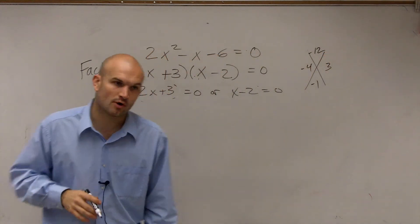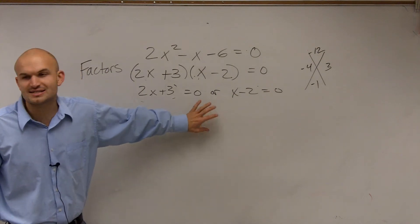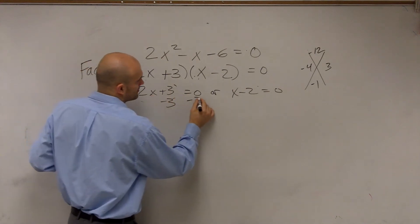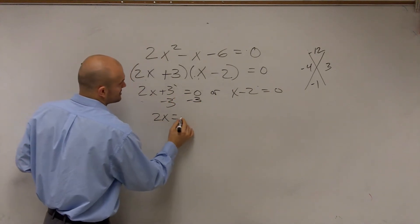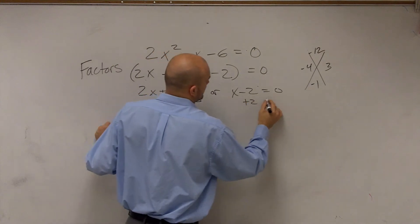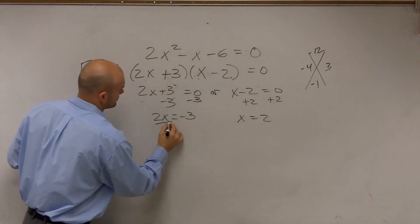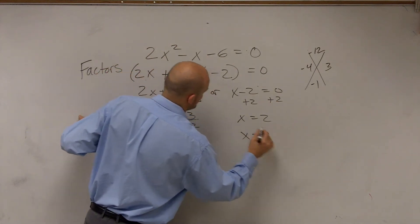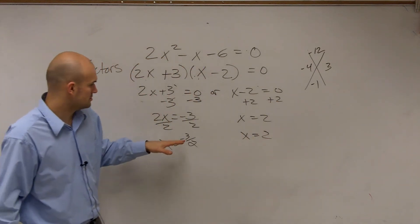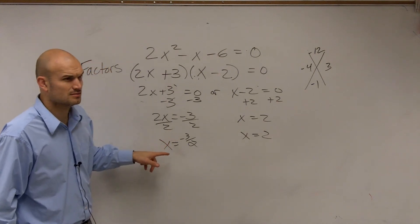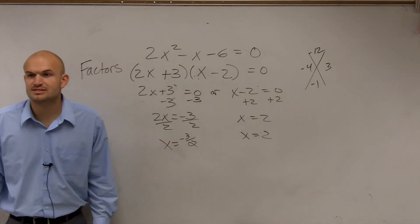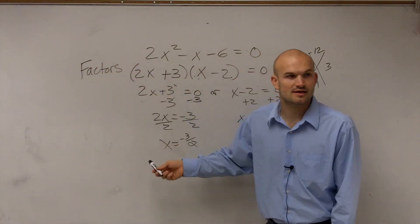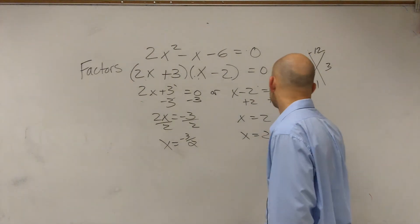All right. So now we get to this point. And we say, it says solve, but they're asking us to find the zeros and our roots. So what we're going to do is now solve for x. So therefore, we have 2x = -3, so x = -3/2. And x - 2 = 0, so x = 2. So now I have x = -3/2 and x = 2.